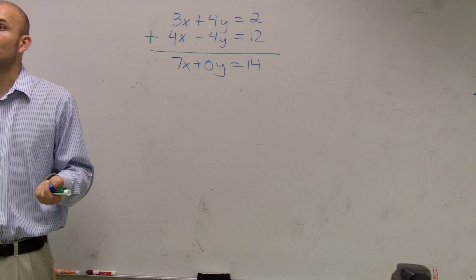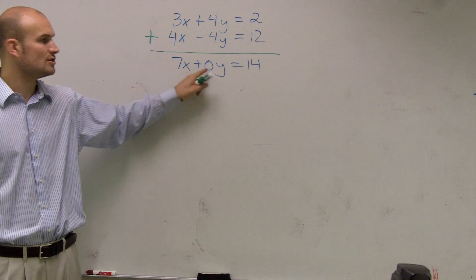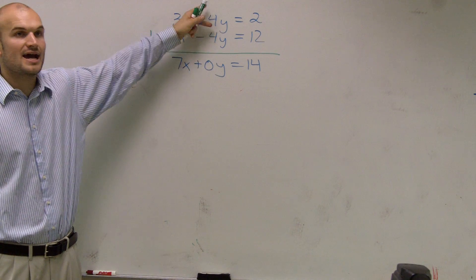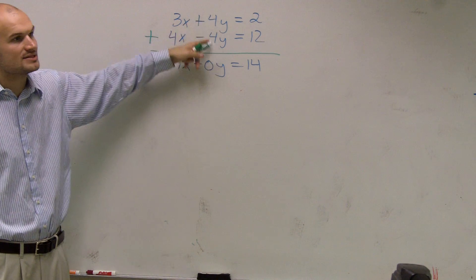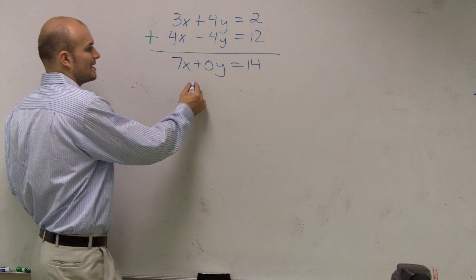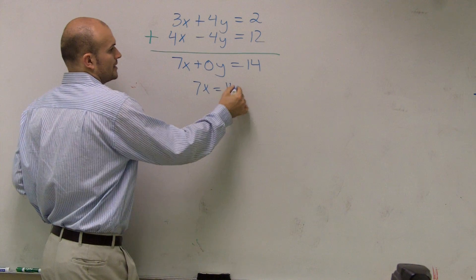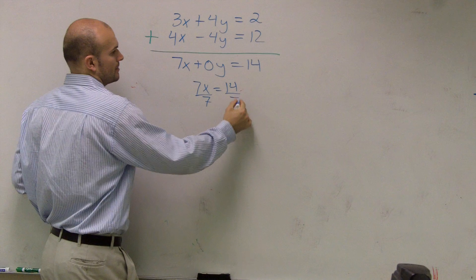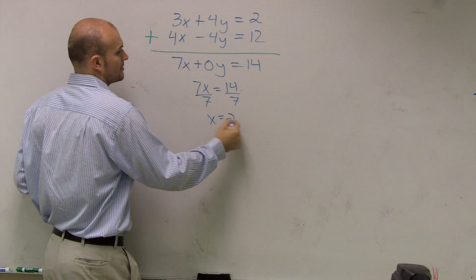And then again, what happened was we eliminated the y variable. Because since they have the same number with opposite signs, we eliminate that one. So we get 7x equals 14. Divide by 7. x equals 2.